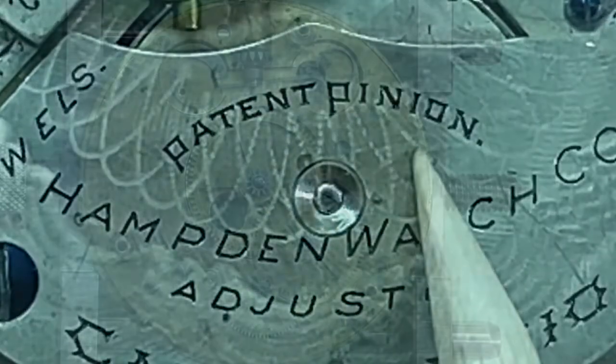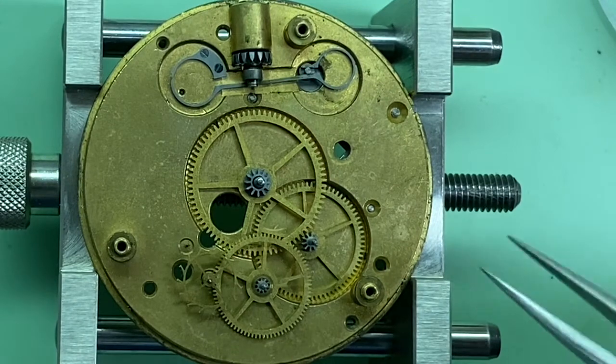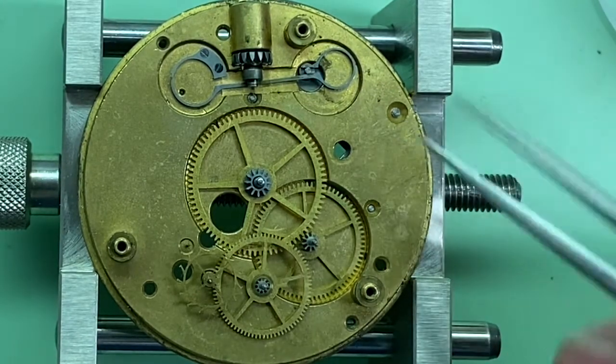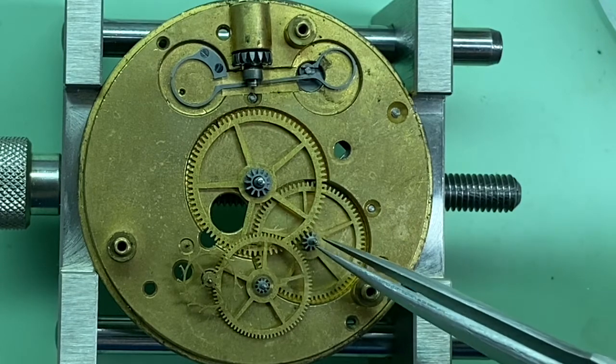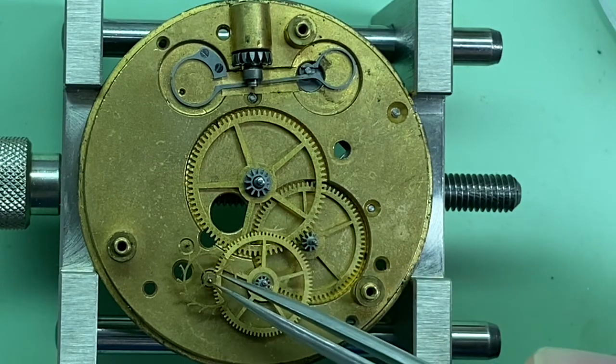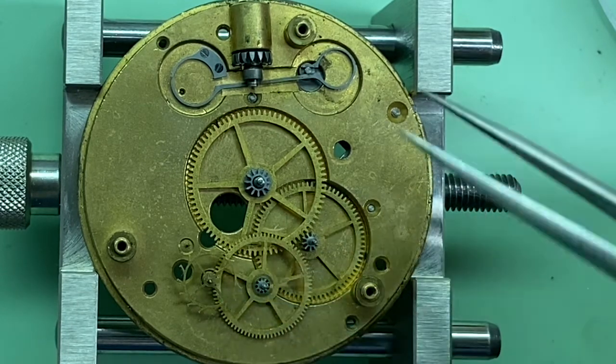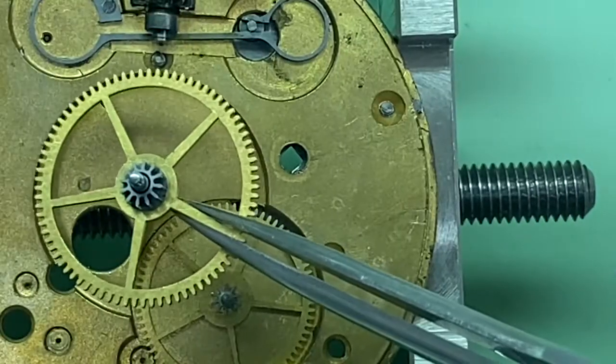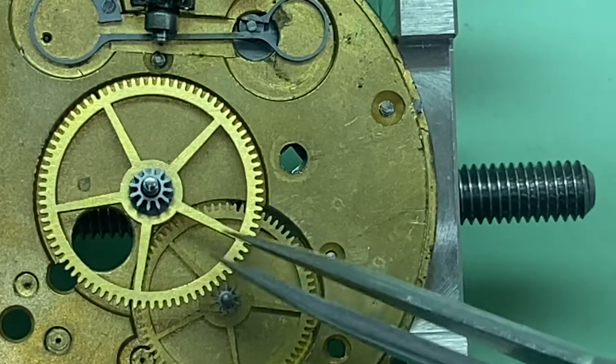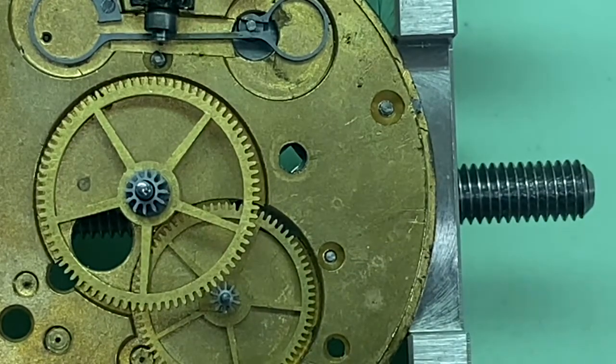So what's a pinion? A pinion's a little gear that's on the big gear that's on the watch. The watch has gears in it, and the gears are called wheels in the watch repair business.